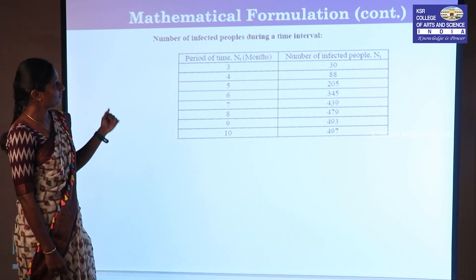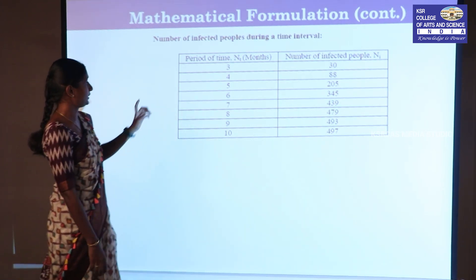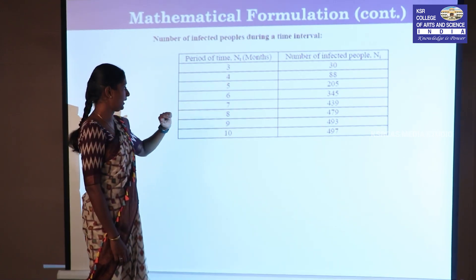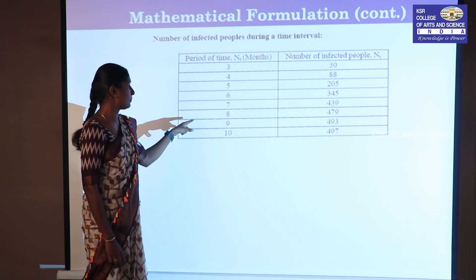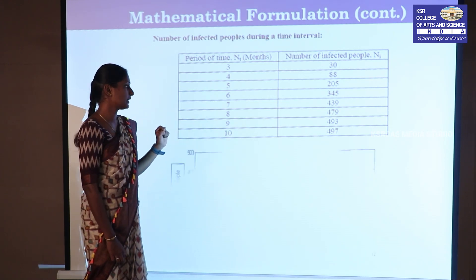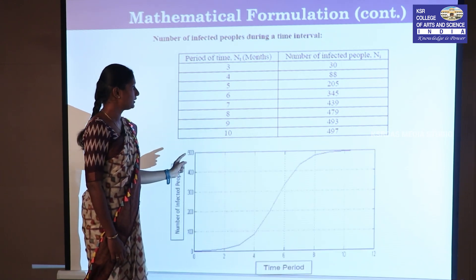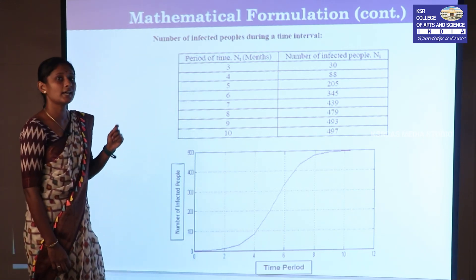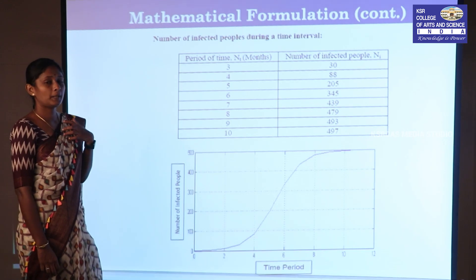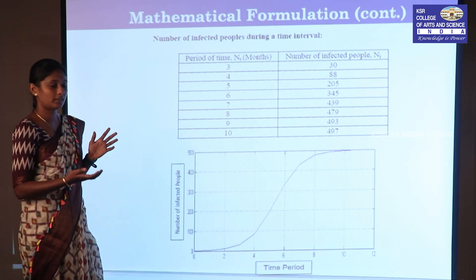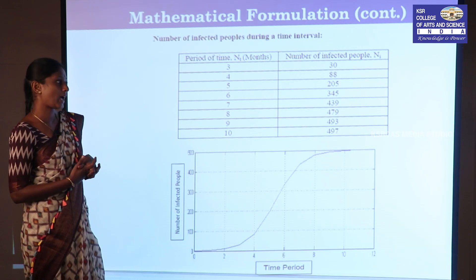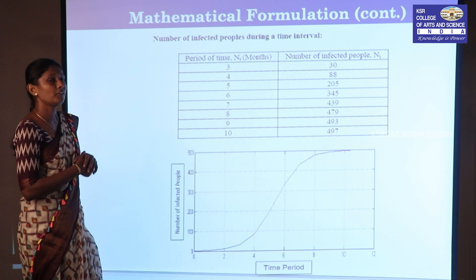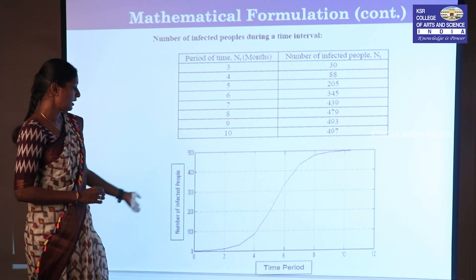Under this model, after the 3rd month 30 people are infected, after the 8th month 479 people are infected, and after the 10th month 497 people are infected. Under the assumption that no one leaves the village, the number of infected people increases gradually.